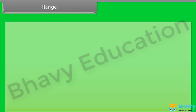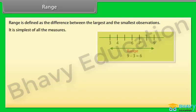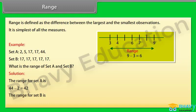Range. Range is defined as the difference between the largest and the smallest observations. It is the simplest of all the measures. For example, the range for set A is 44 minus 2 which equals 42, and the range for set B is 17 minus 17 which equals 0.